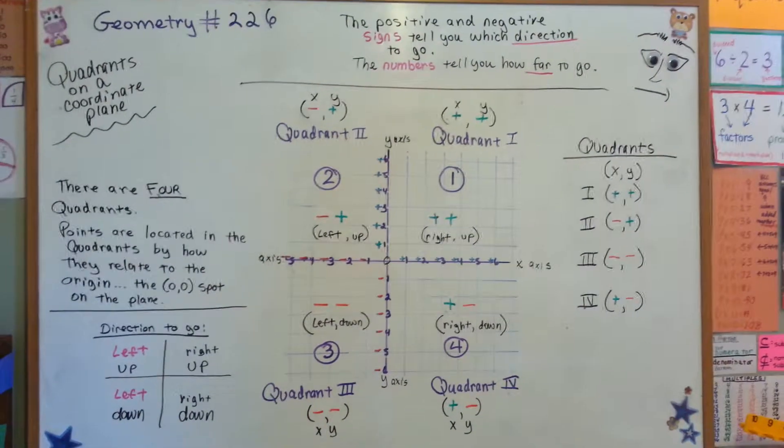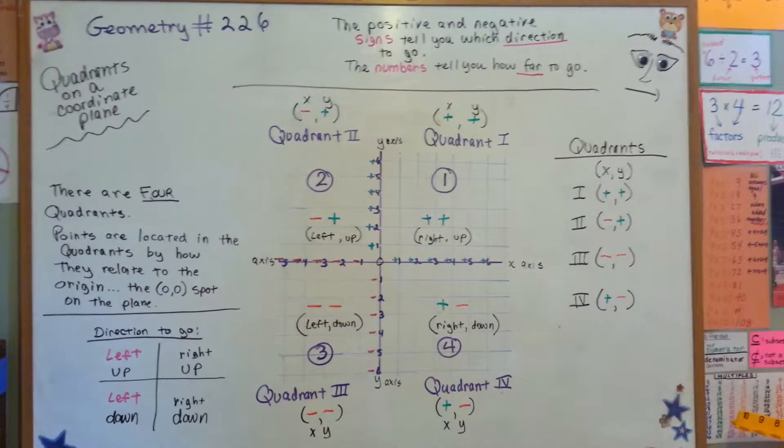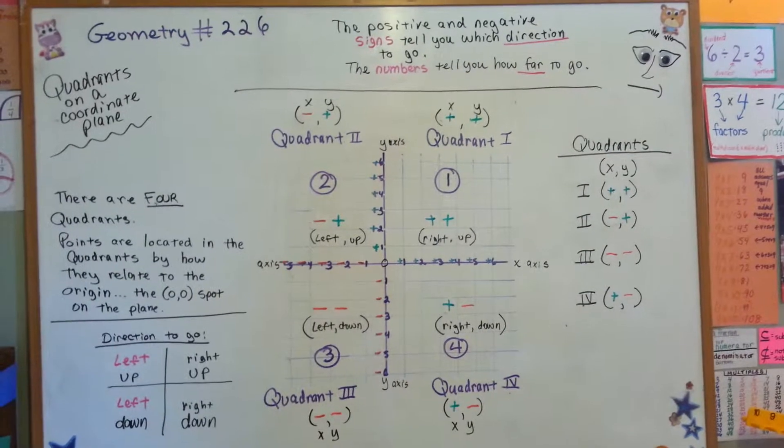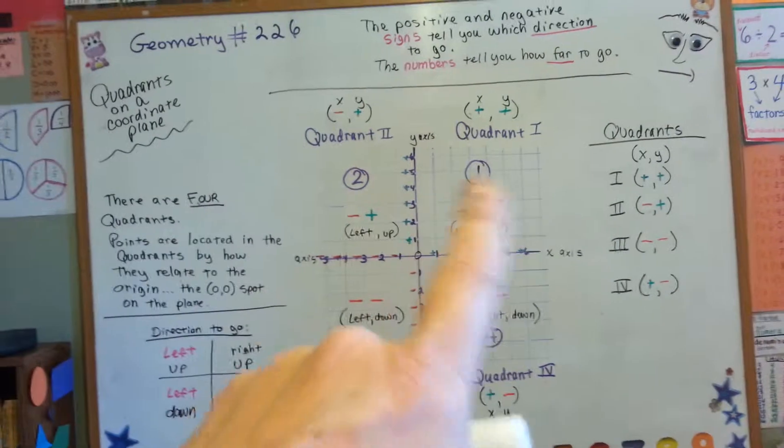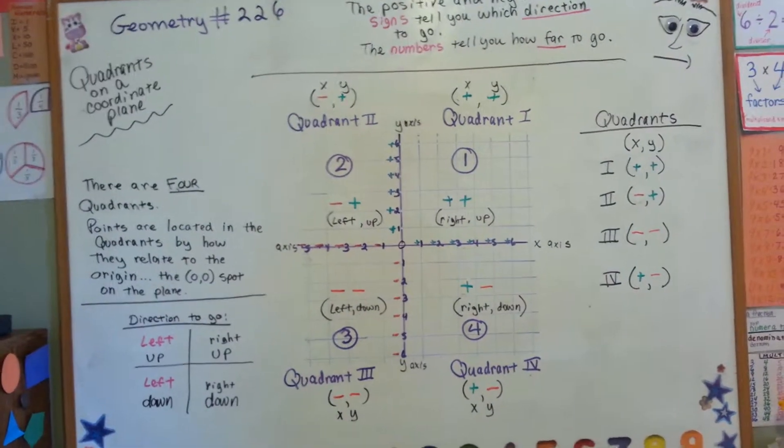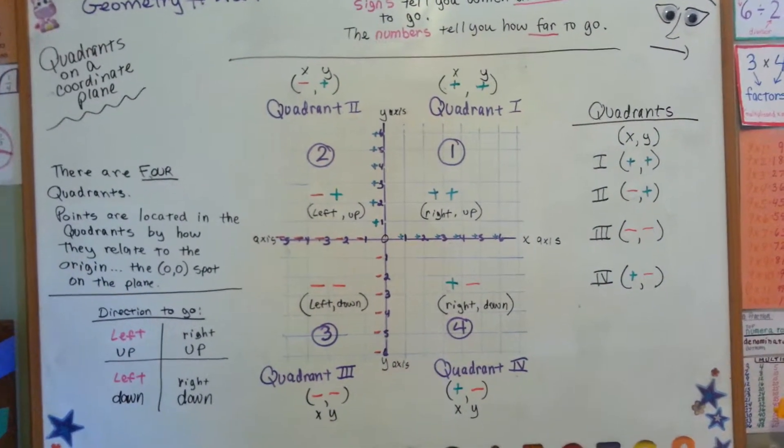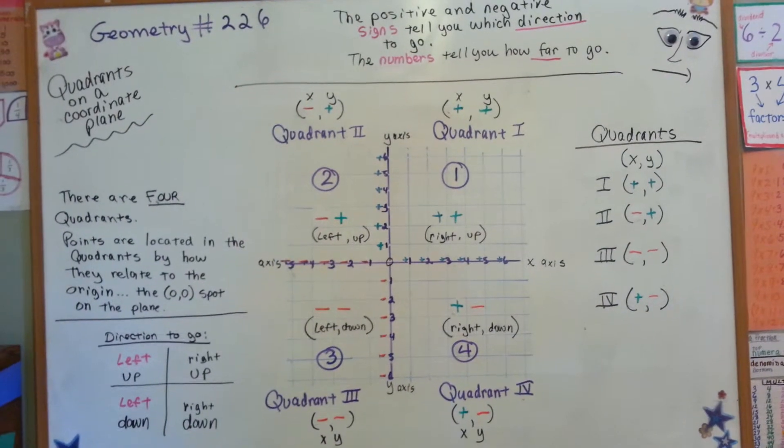So those are the quadrants on a coordinate plane. And we're gonna discuss putting numbers into these ordered pairs and where they would show up on the coordinate plane. I'll see you next video.